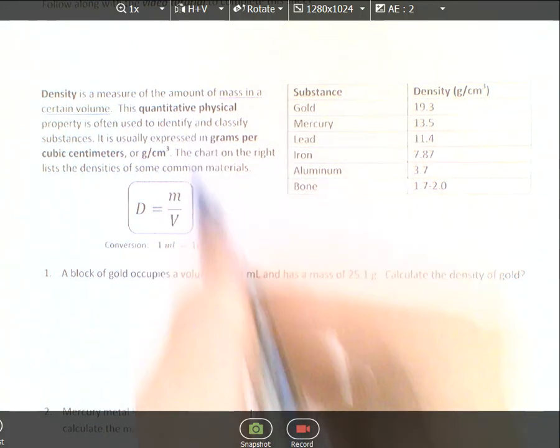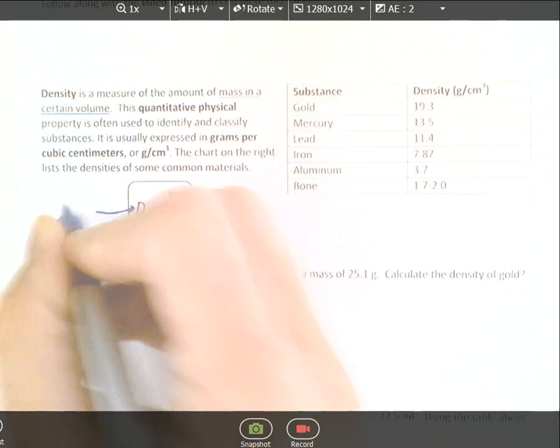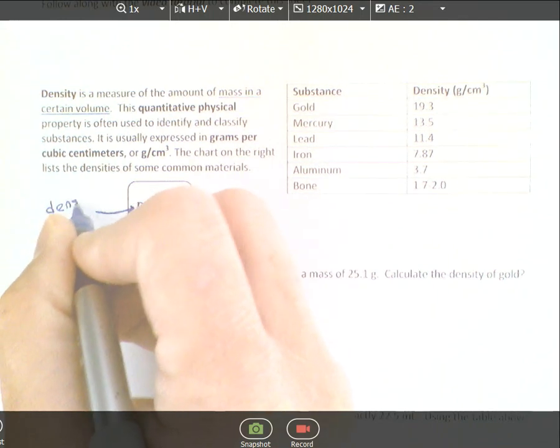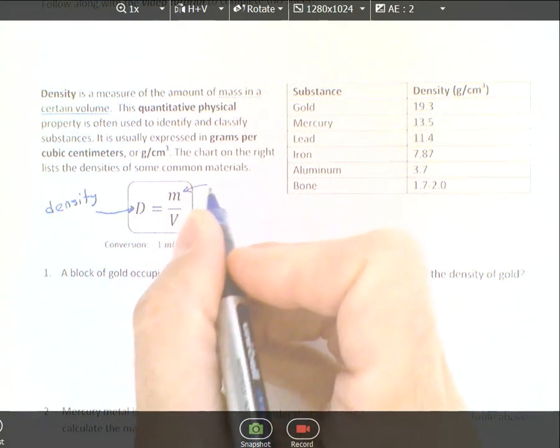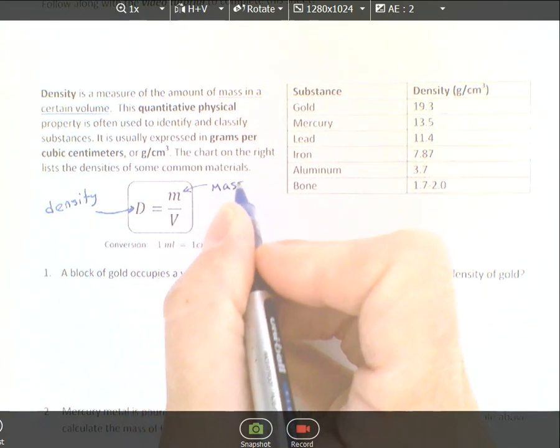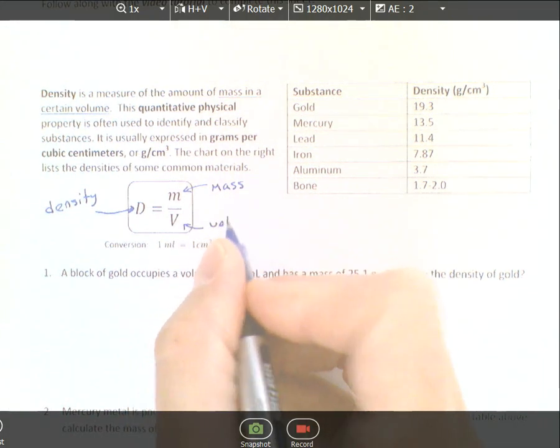Density is expressed as D equals M over V. D is density, M is the mass of the object, and V is the volume.